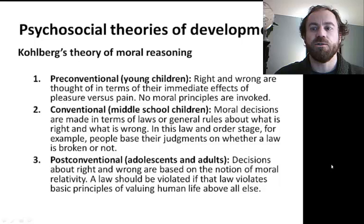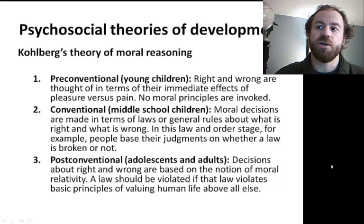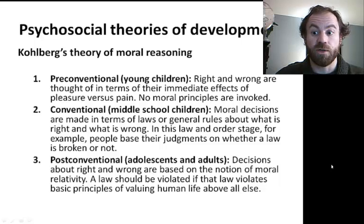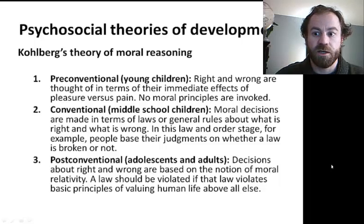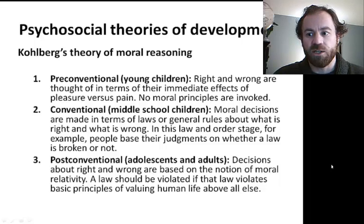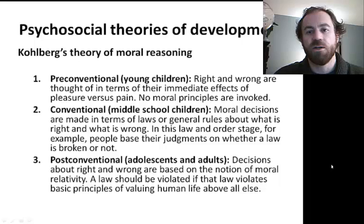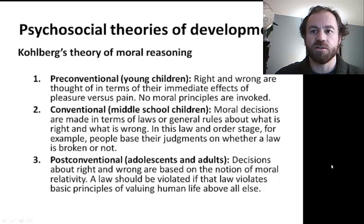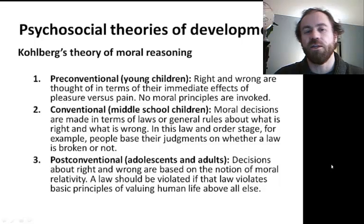Later on, during the post-conventional stage of moral reasoning, decisions about right and wrong are based on the notion of moral relativity — that sometimes a law should be broken. As Martin Luther King so eloquently said, there are two types of laws: just and unjust. One has not only a legal but a moral responsibility to obey just laws. Conversely, one has a moral responsibility to disobey unjust laws. This concept cannot truly be grasped by a child until they are in the post-conventional morality stage, according to Lawrence Kohlberg.